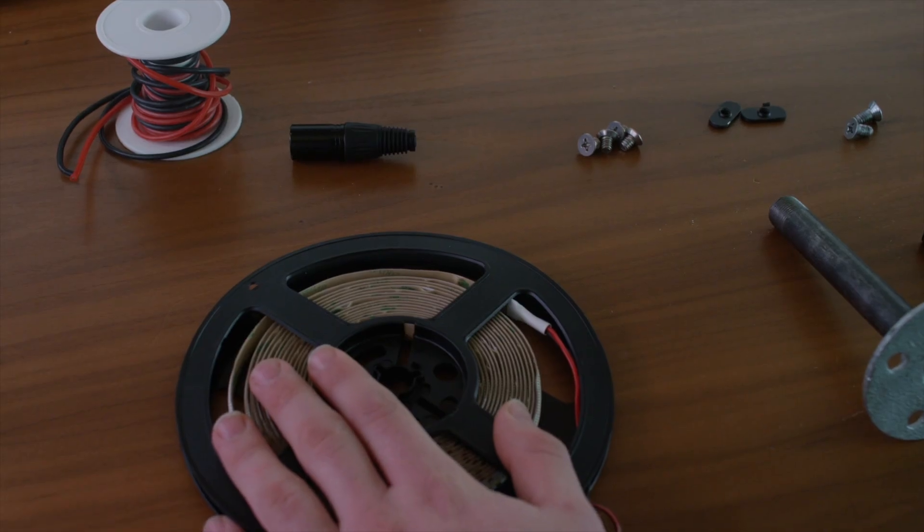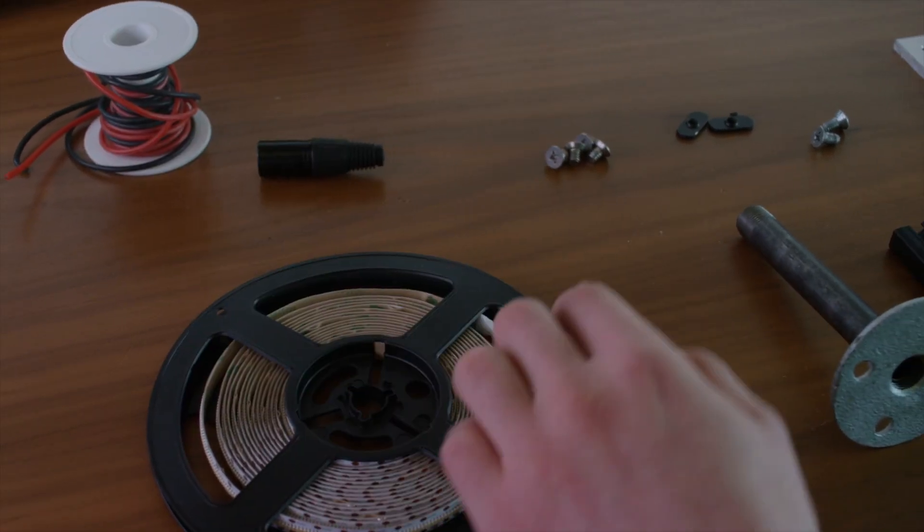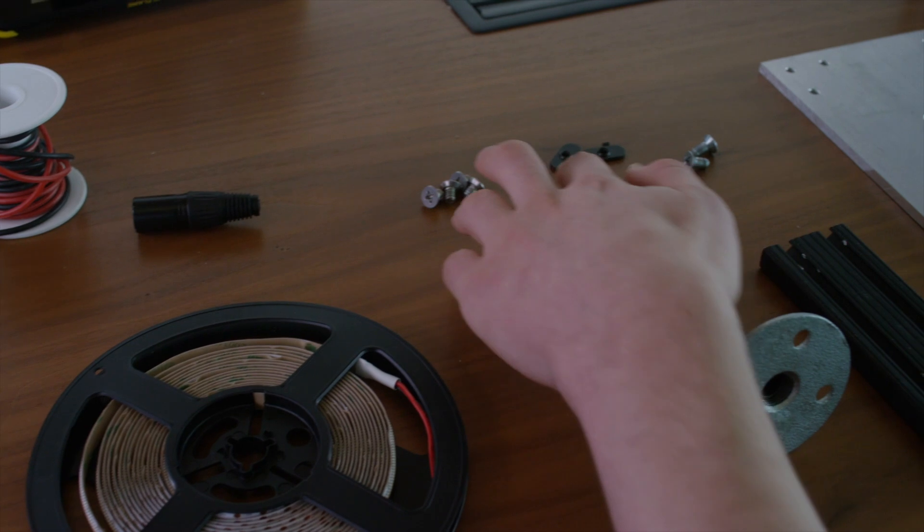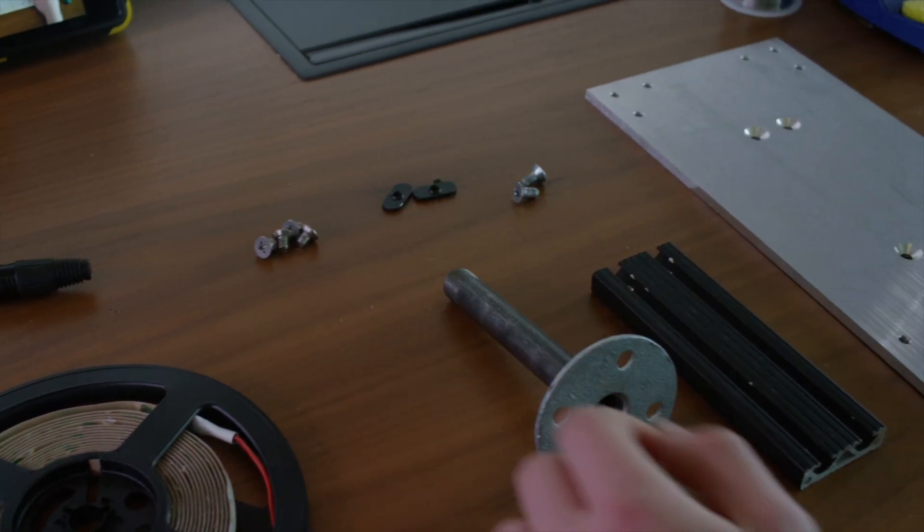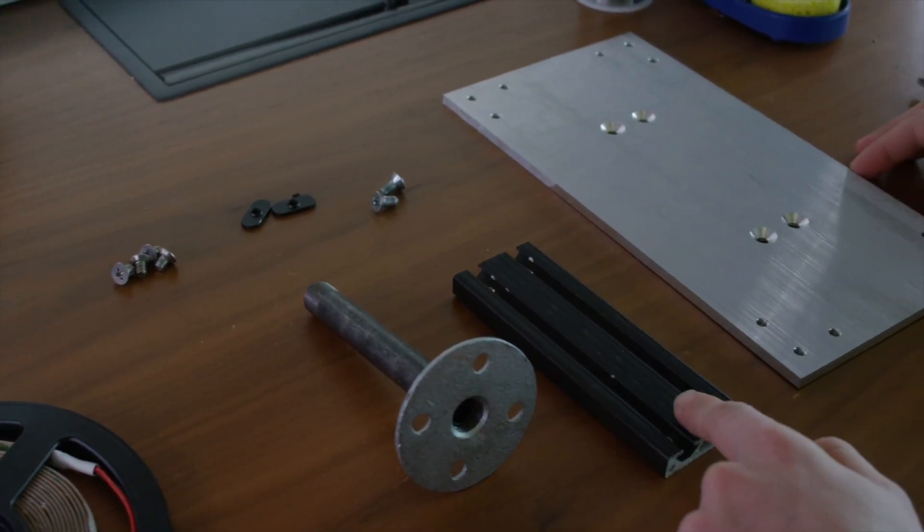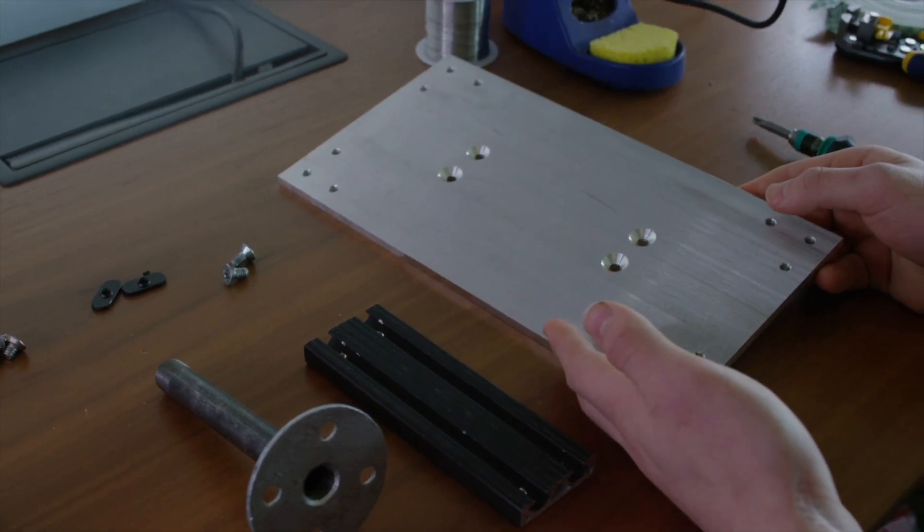For this build we're going to be using some LED strip, some wire, an XLR connector, some screws and bolts, a flange, a piece of 8020, and this piece of milled aluminum which will be your panel.